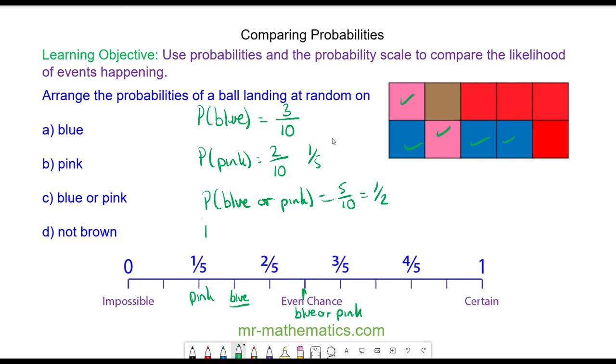And finally, the probability of not brown. There are ten in total and one of them is brown. So ten take away one is nine. And that would be nine tenths, which would be here.